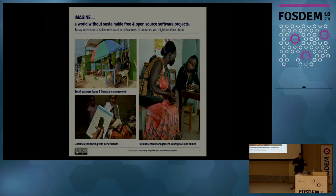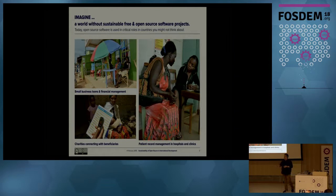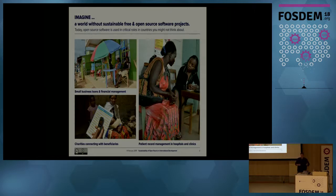Most even the lowest income countries are using open source software today in their healthcare systems. And charities working in these countries, helping beneficiaries live better and more productive lives, are using open source software because of its efficiency and cost effectiveness to make sure that their programs are running at the optimum level.